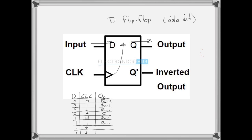The rising edge is when the output will change to whatever D is. So: you put something in on D, Q is going to remain what it was before until a rising edge of a clock pulse is seen, and then it will change Q to be whatever D is. That's your D flip-flop, or data bit — a basic sequential, basic timed, single-bit memory chip.